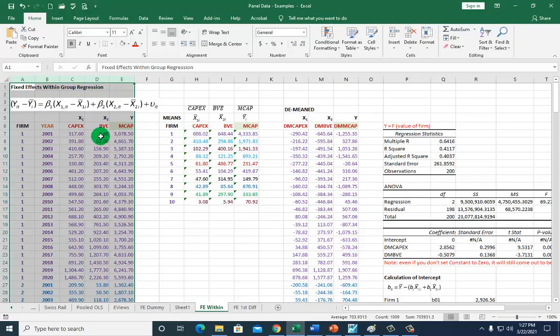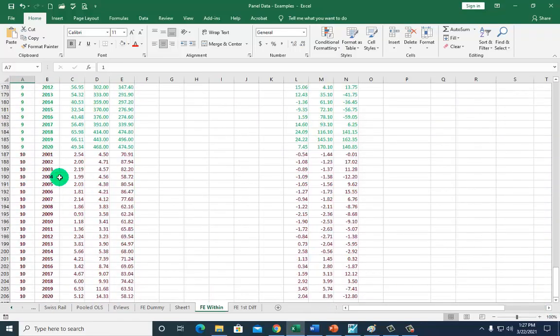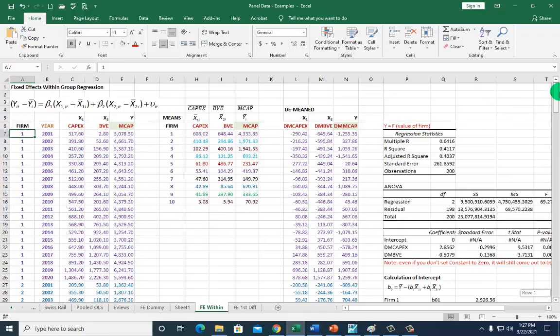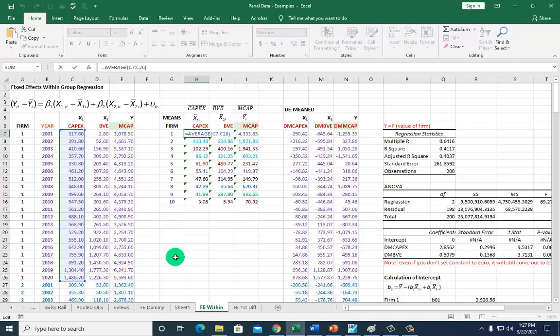And now for each of these firms from one to, if I scroll down, you can see there are 10 firms in all. So for each of these 10 firms over the period 2001 to 2020, I calculated their time means right here. So if I click just on one and hit F2, you can see the calculation right there.